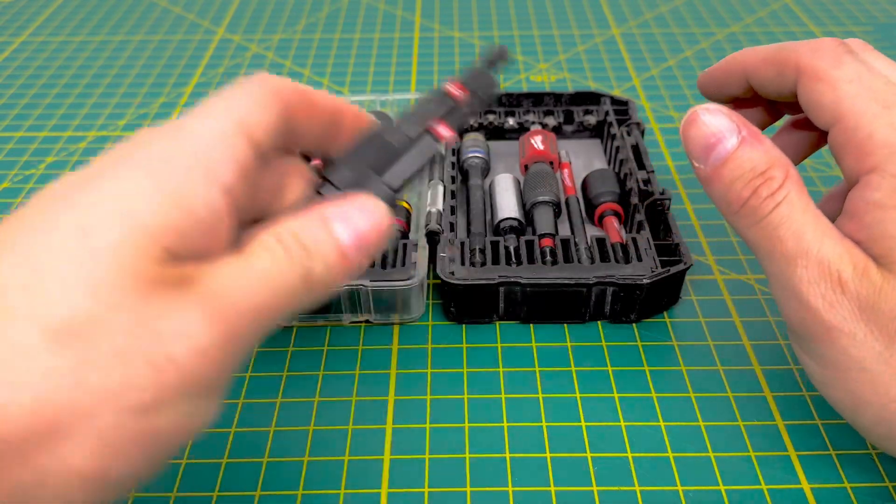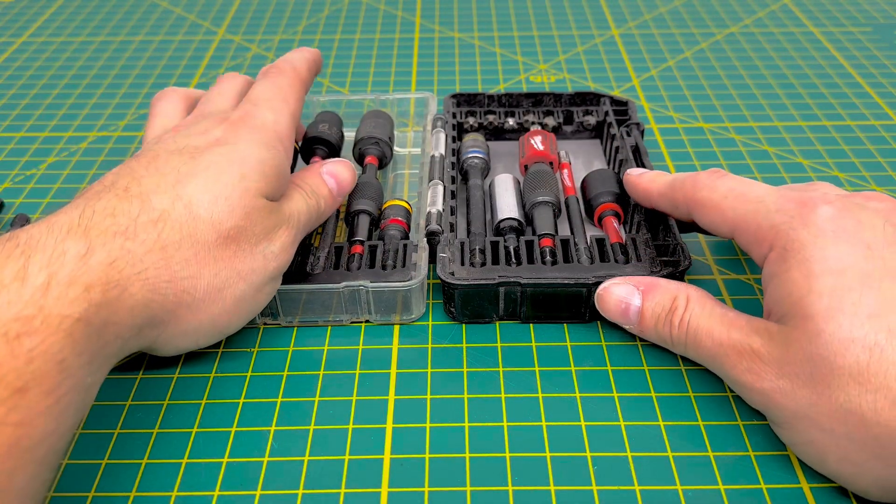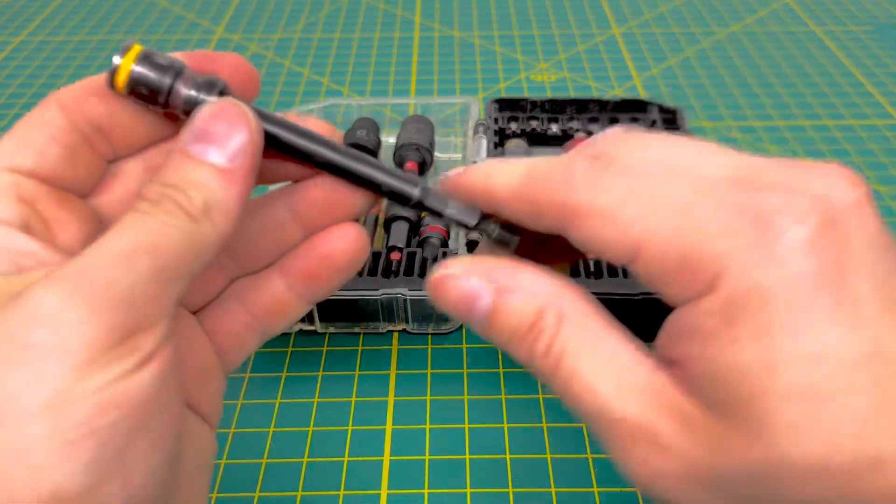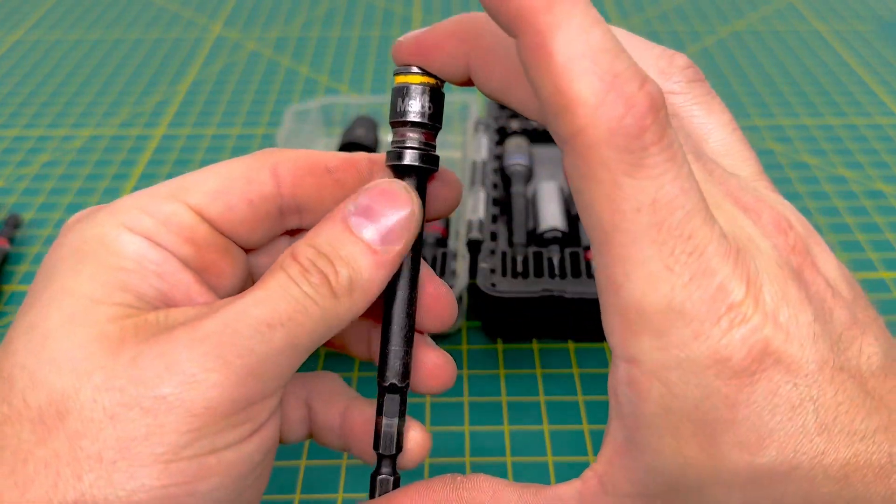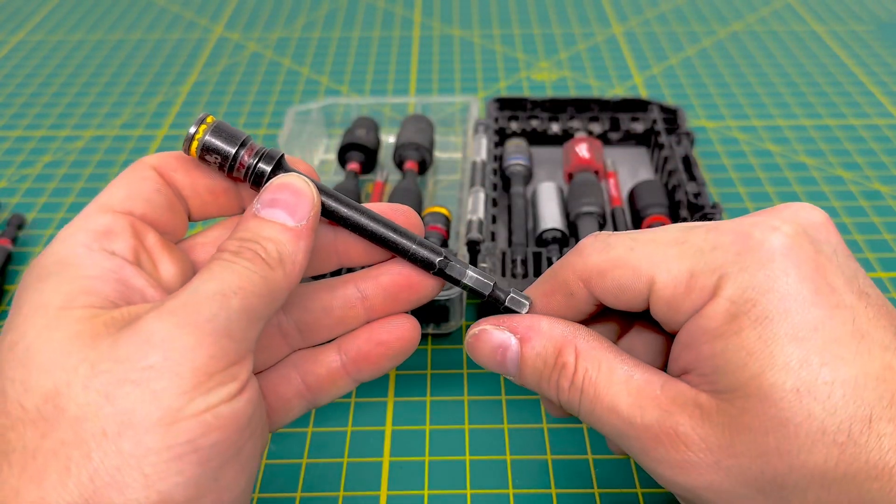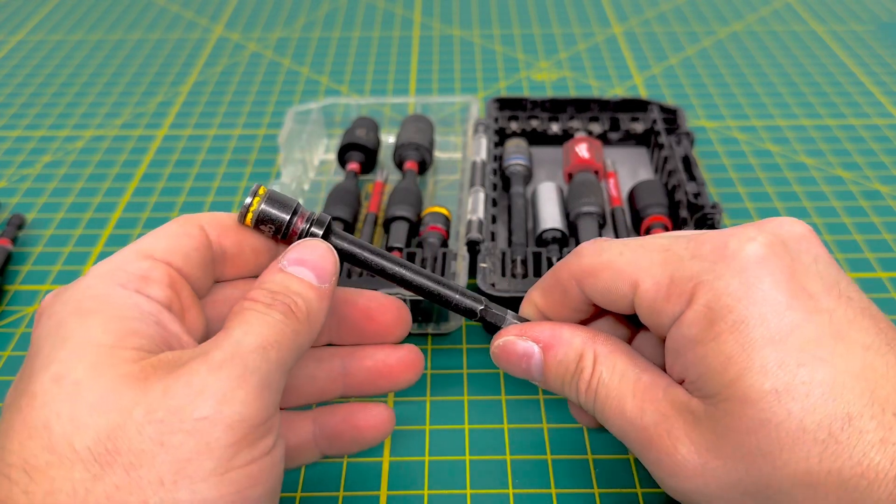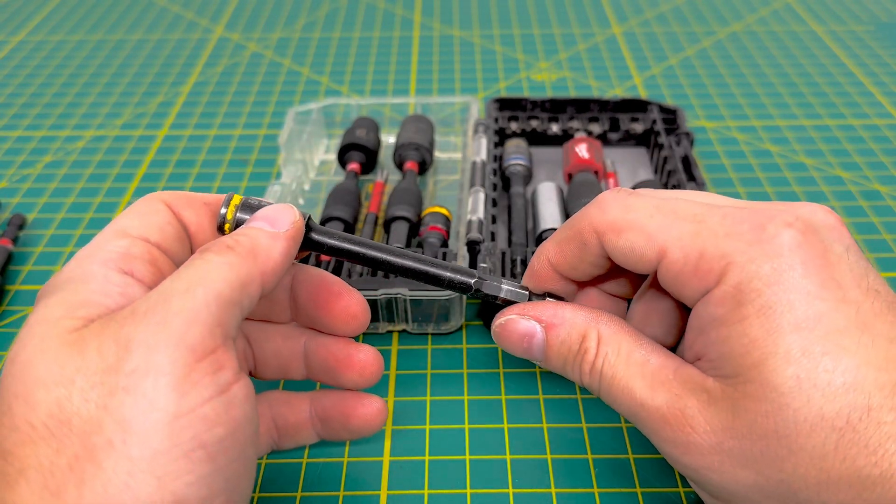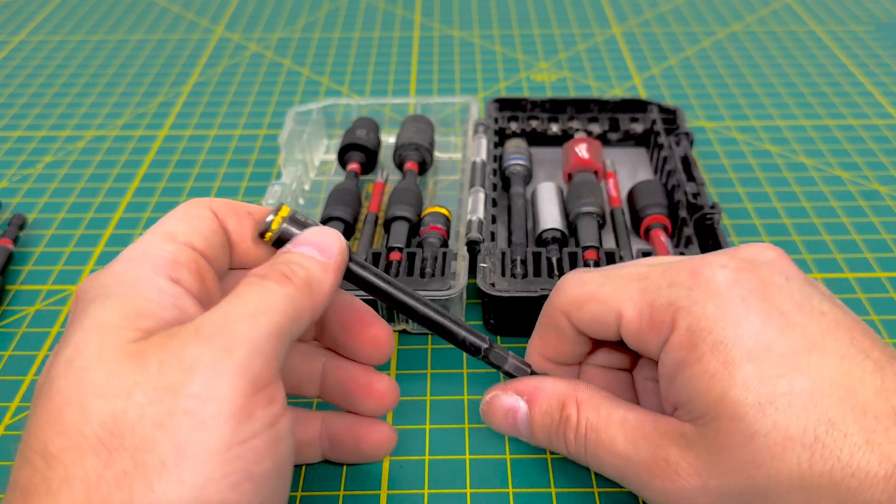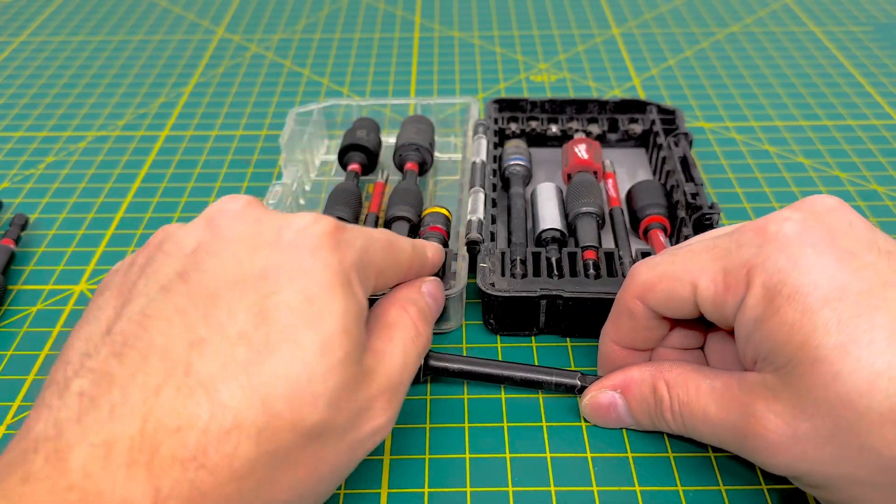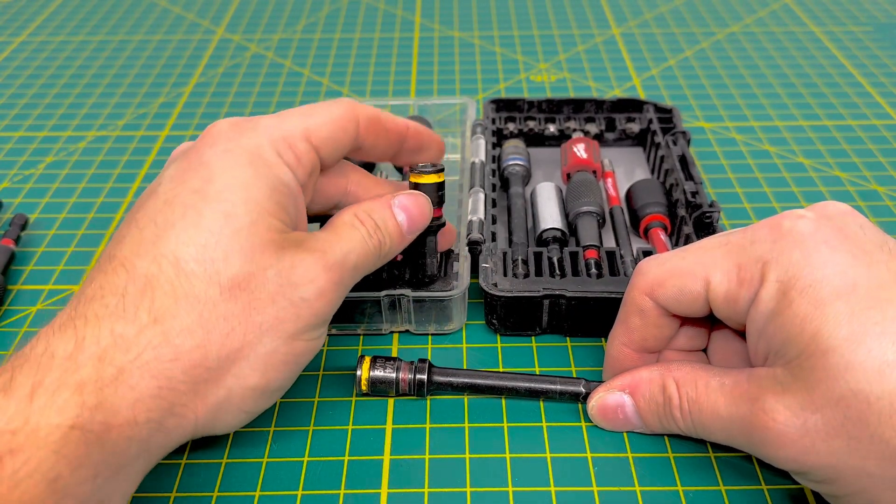So to start off with, we have the Malco quarter 5/16ths bit. Now, this is the 4-inch long bit. Malco does offer a 2-inch long bit, I believe a little smaller one than that, which you see right here. This is the smallest one Malco makes.